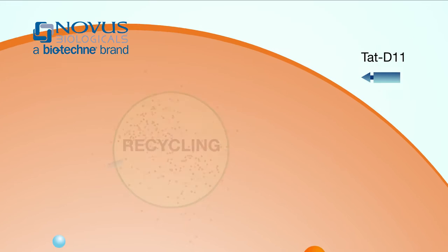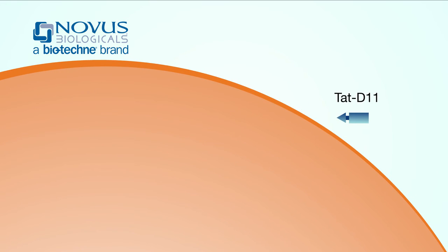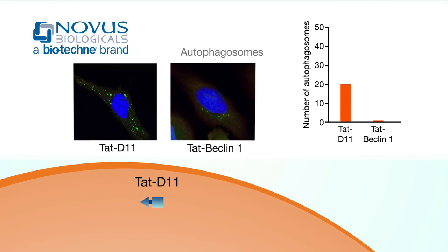Novus' new Tat-D11 peptide works the same way, but it's shorter, allowing for better entry into cells. It induces more than five times as much autophagy as the longer peptide. That potency means you'll need less of it, all while maintaining a high level of specificity.